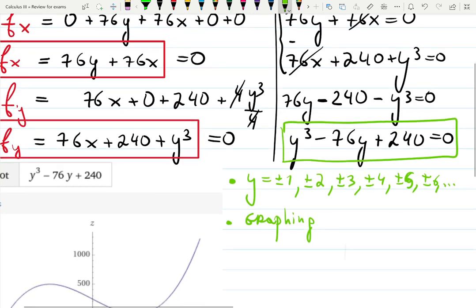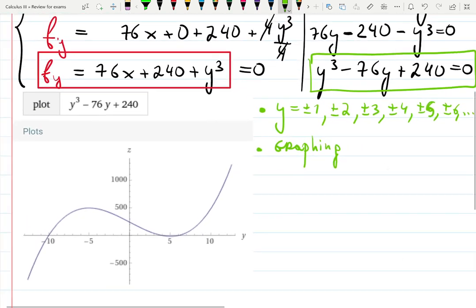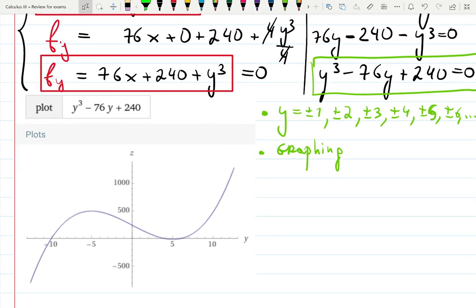So that's why I have a graph prepared for you here. Here is a graph of this function y³ minus 76y plus 240. It has three places where it intersects the axis.